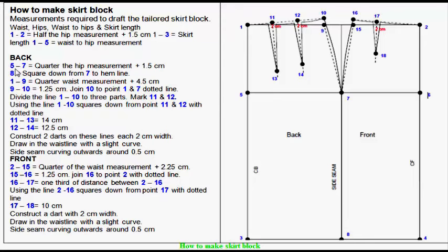Back: 5-7 quarter the hip measurement plus 1.5 cm. 8: Square down from 7 to hemline.